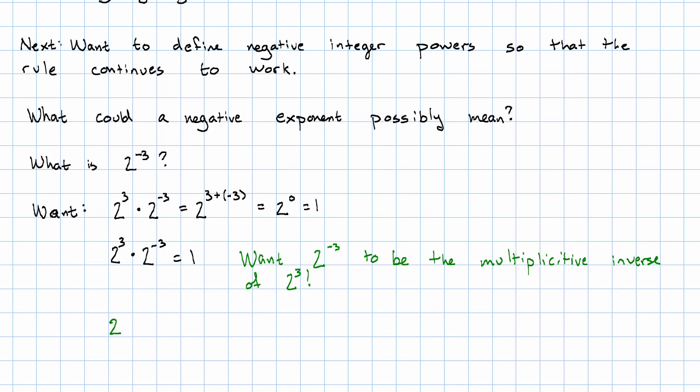Two to the third is eight. So it's eight whole things. It must be that two to the negative third is just the reciprocal of that, one eighth. So eight times one eighth is one. That's what we wanted to have happen.